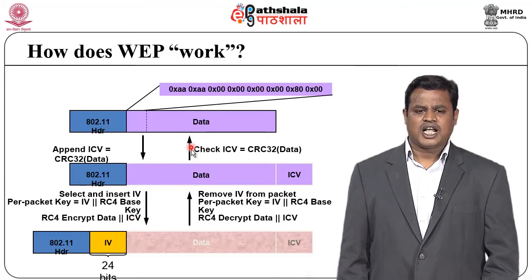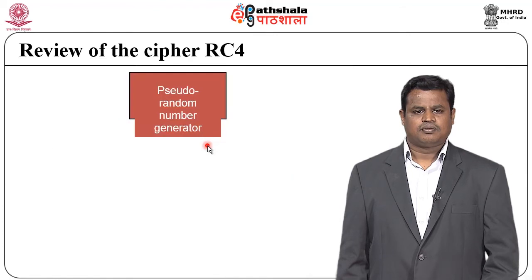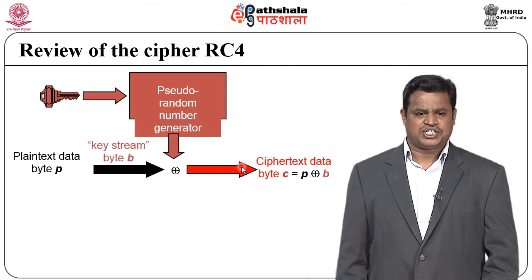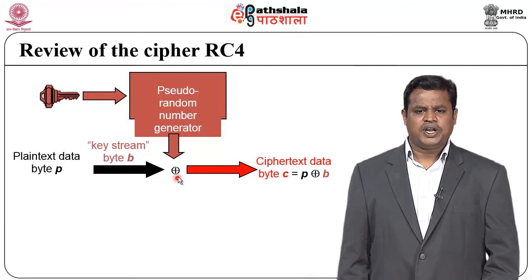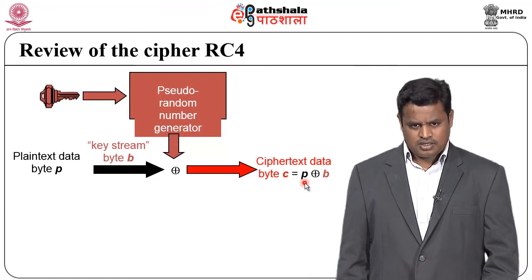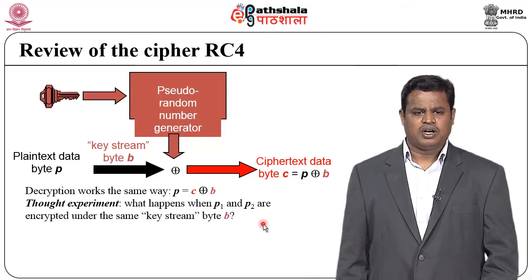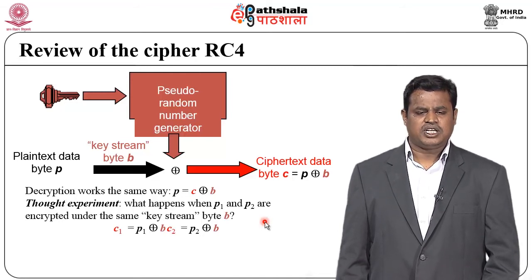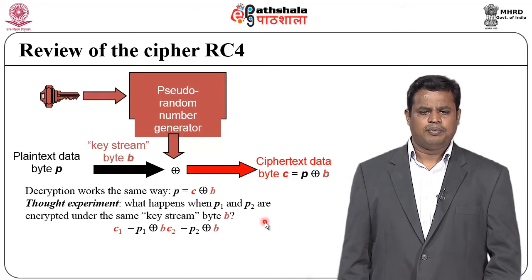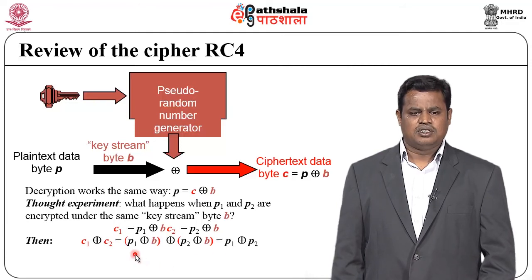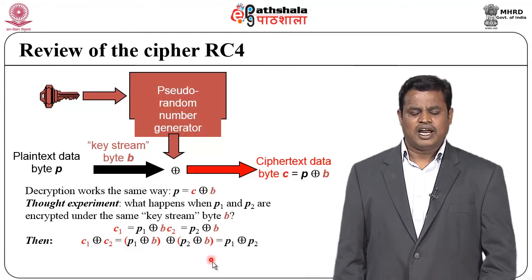If both ICV values match before and after transmission, we can ensure the data was not modified or intercepted. RC4 works based on a pseudo-random generator — it takes plain text as data bytes and performs an XOR operation to generate cipher text. Decryption works the same way as encryption, but the same key stream must be used. C1 = P1 XOR B, C2 = P2 XOR B (where B is the key byte stream), so double XOR gets back the plain text.